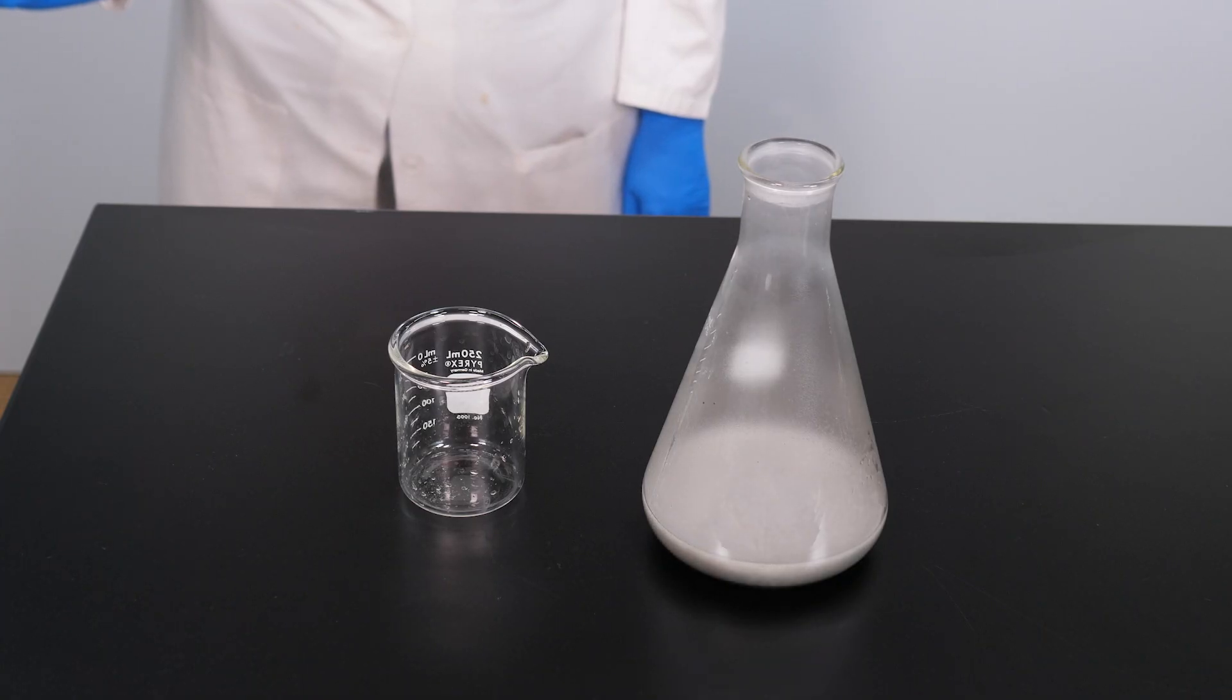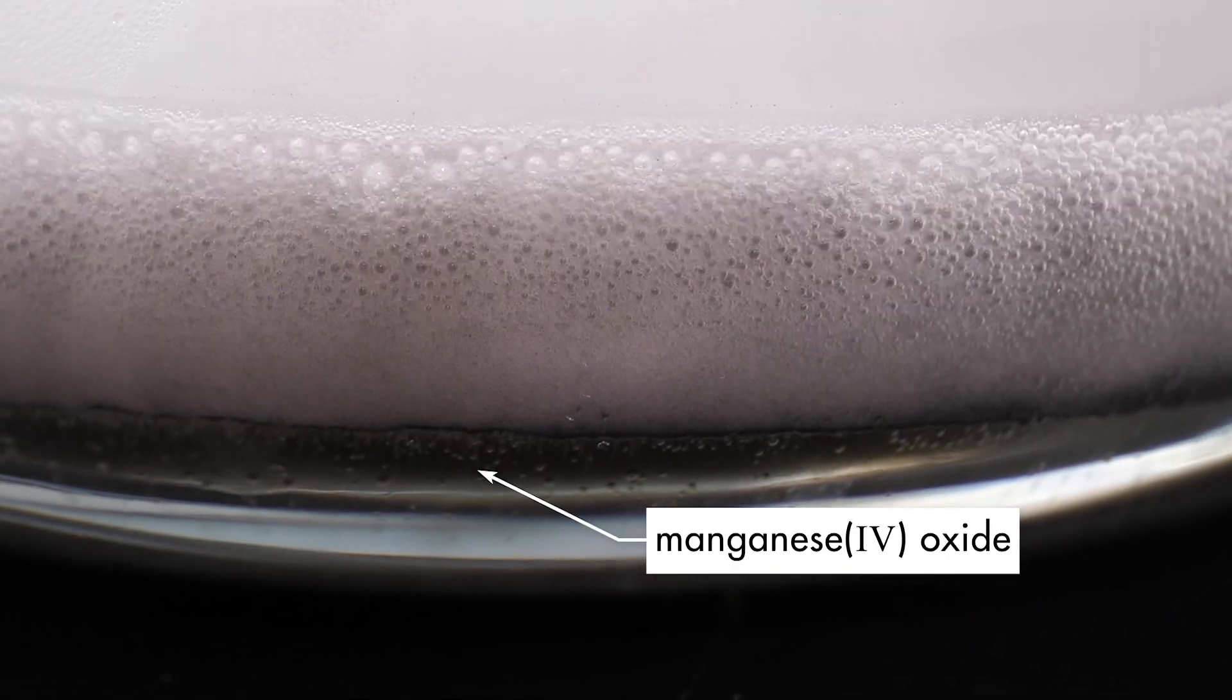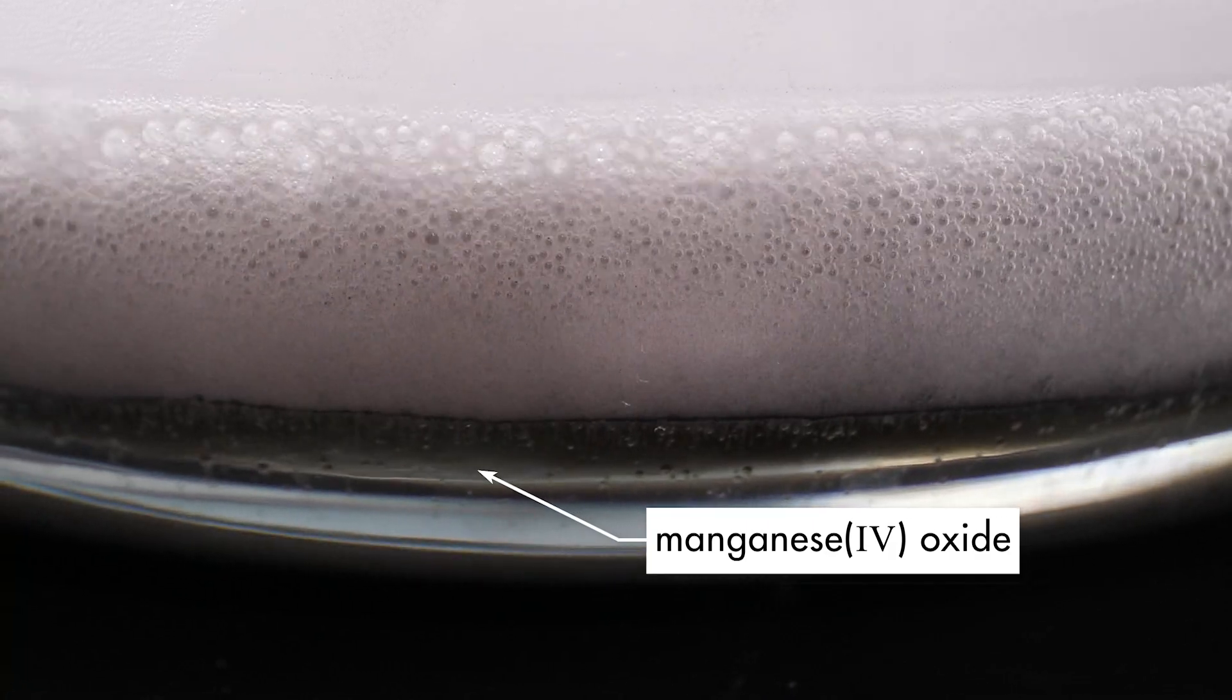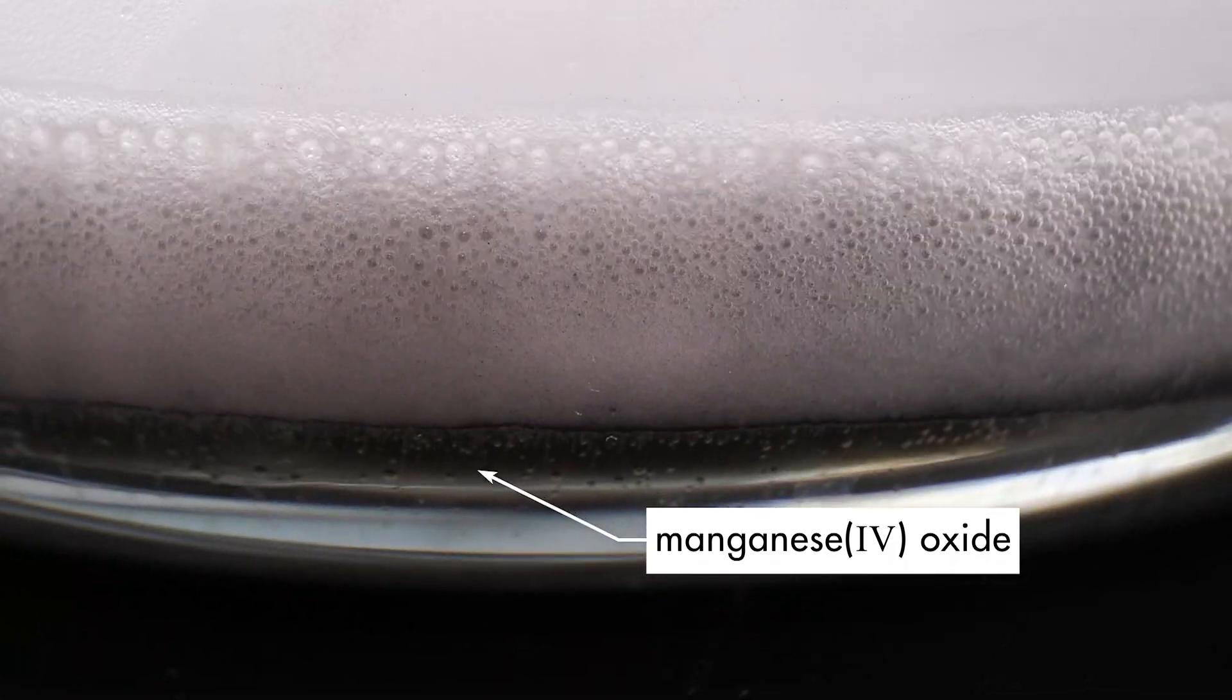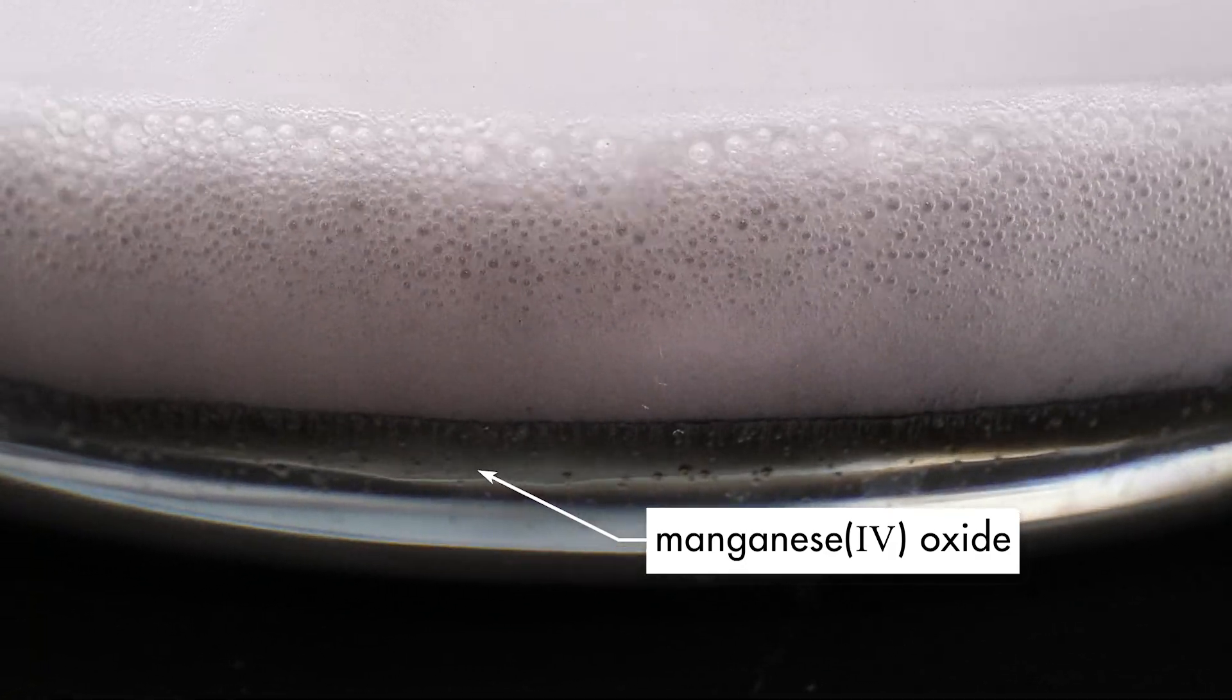After the reaction has ceased and the flask has cooled, we can see that the manganese(IV) oxide is still present. The catalyst caused the reaction to speed up, but it has not been altered by the reaction.